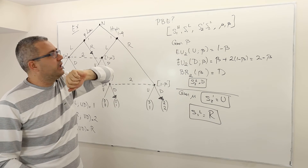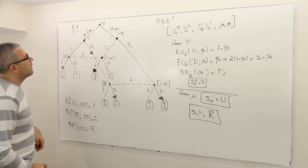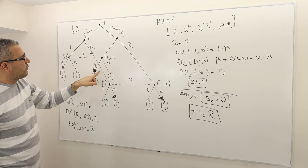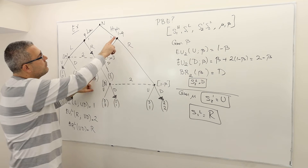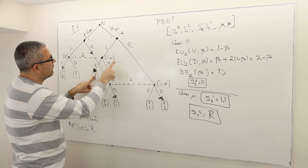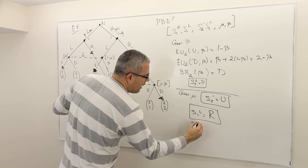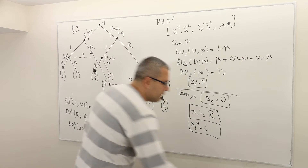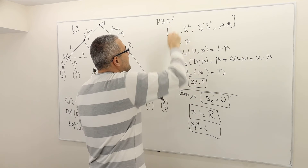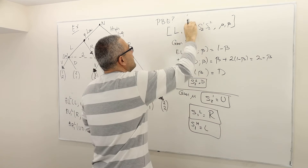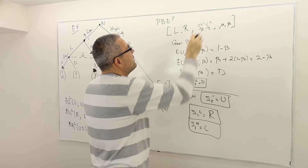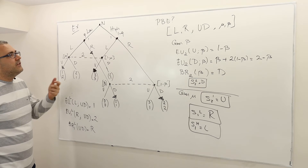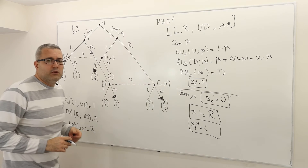There are only three things left to find: S1 high type, mu, and beta. Do the same thing for the high type. If he chooses left, player two is playing U here, so he's going to get three. If he chooses right, he's going to get two. So left is the best response — S1 high type is going to play left. So the perfect Bayesian equilibrium has the following structure: left for high type, right for low type, and U-D for player two. What about mu and beta? They have to be Bayesian consistent. So what are the on-equilibrium and off-equilibrium info sets here?